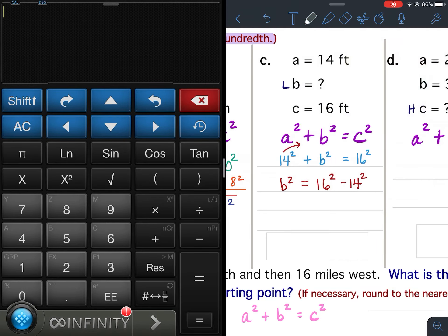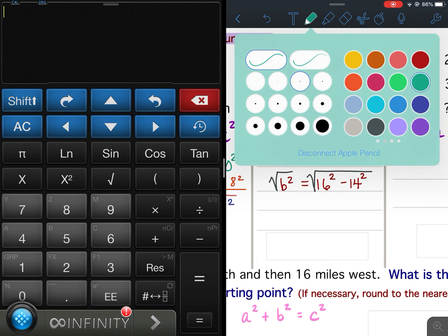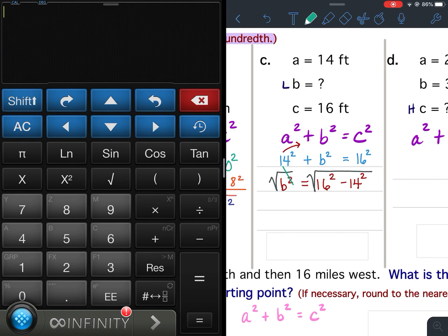Now I'm going to take the square root of both sides. So to get rid of the square, the opposite of squaring something is the square root. So my square root and my square cancel out.